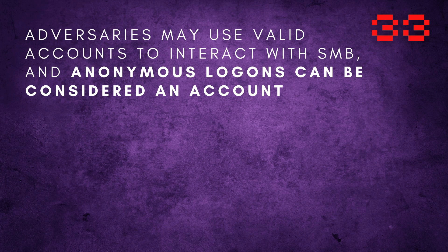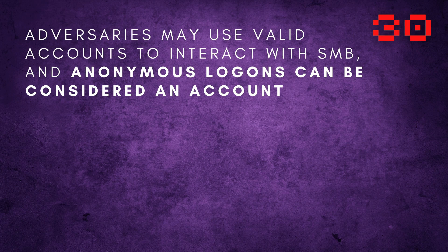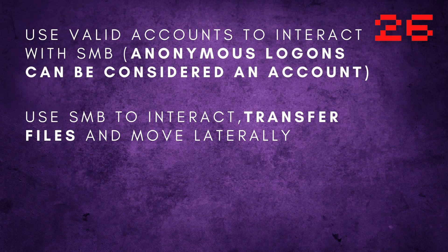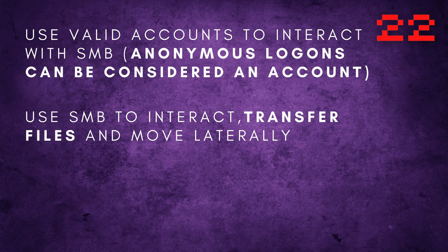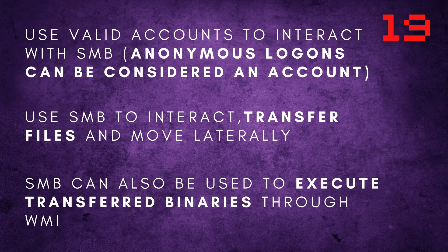Adversaries may use valid accounts to interact with SMB, and anonymous logons can be considered an account in a threat vector like this. Adversaries can use SMB to interact with file shares, transfer files to and from the server, and move laterally through the network. SMB can also be used to execute transferred binaries through WMI.